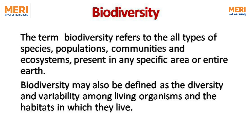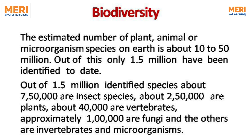Biodiversity may also be defined as the diversity and variability among living organisms and the habitats in which they live. The estimated number of plant, animal, or microorganism species on earth is about 10 to 50 million. Out of these, only 1.5 million have been identified to date. Of the 1.5 million identified species, about 750,000 are insect species, 250,000 are plants, 40,000 are vertebrates, approximately 1,000,000 are fungi, and the others are invertebrates and microorganisms.